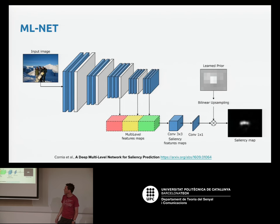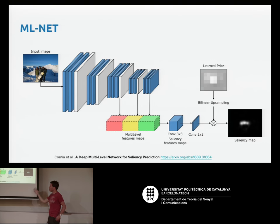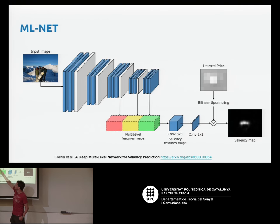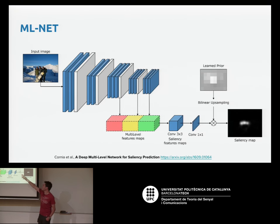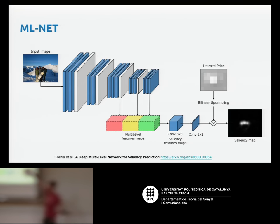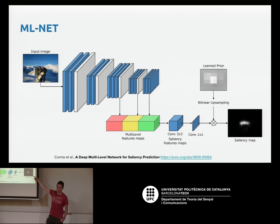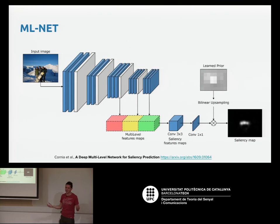Another model is MLNet, or Multi-Level Net. This is similar to SALICON except they take multiple scales from the same network by using the same-size image but taking features from different layers, concatenating them all together and doing one-by-one convolutions. One innovation here is a learned prior — weights that get multiplied with the outputs and are learned via backpropagation, just like anything else.